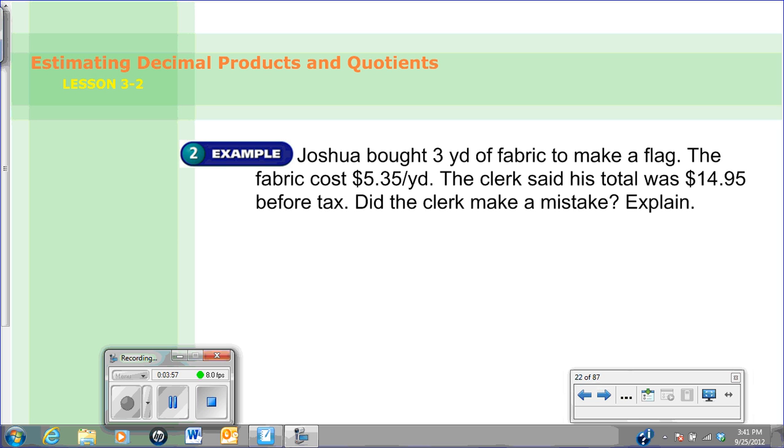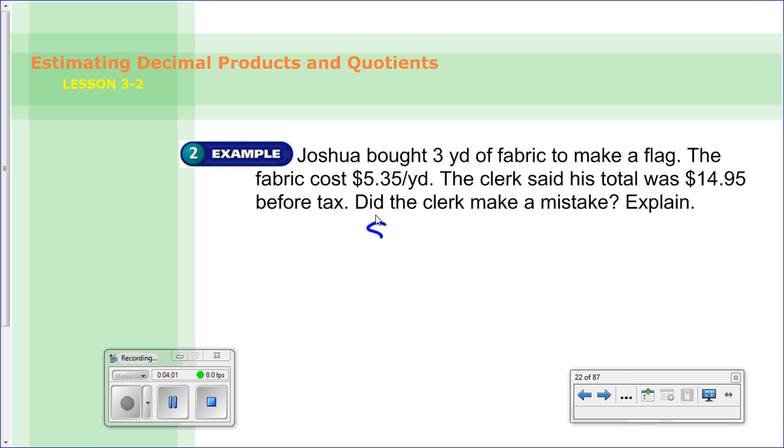Alright, so let's check this one out. Well, we know he bought 3 yards of fabric, and it was $5.35 each. I'm going to round that $5.35 to $5, because it's close to $5. And I know he bought 3 yards. So generally, the least amount it would be is about $15. So now we look at the question. The clerk said his total was $14.95 before tax. Did the clerk make a mistake?